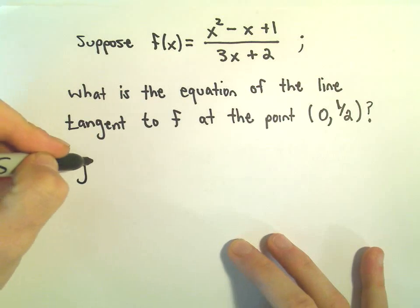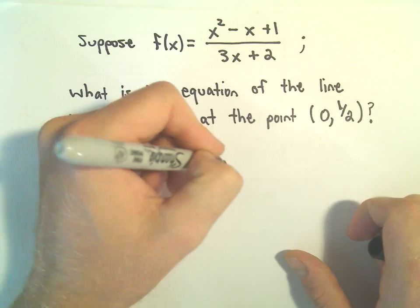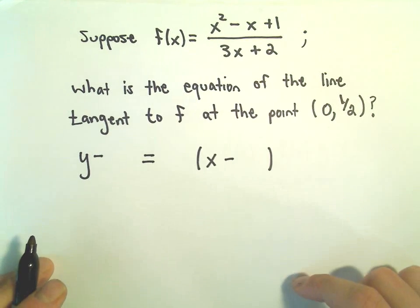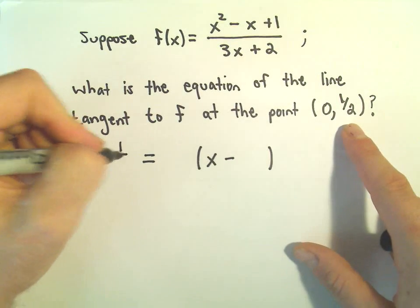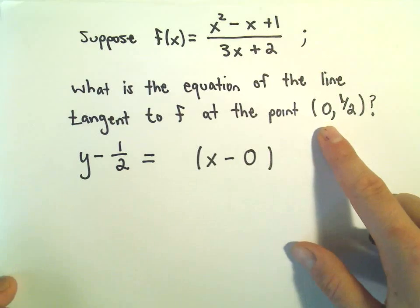So using point-slope formula, y - y₁ = m(x - x₁). We've used this a few times now to find equations of tangent lines. Well, the y-coordinate is just going to be 1/2. The x-coordinate is 0. That's given to us.